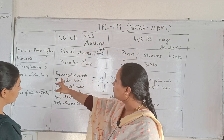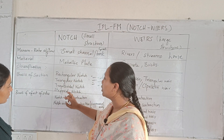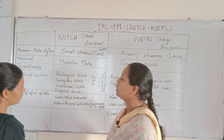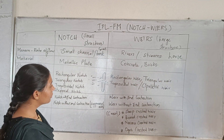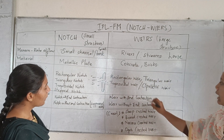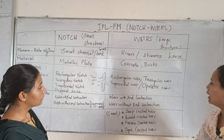In terms of section shape, we have triangular and trapezoidal types. Classification gives us rectangular and triangular notches, as well as trapezoidal types — both rectangular and triangular are primary section classifications.